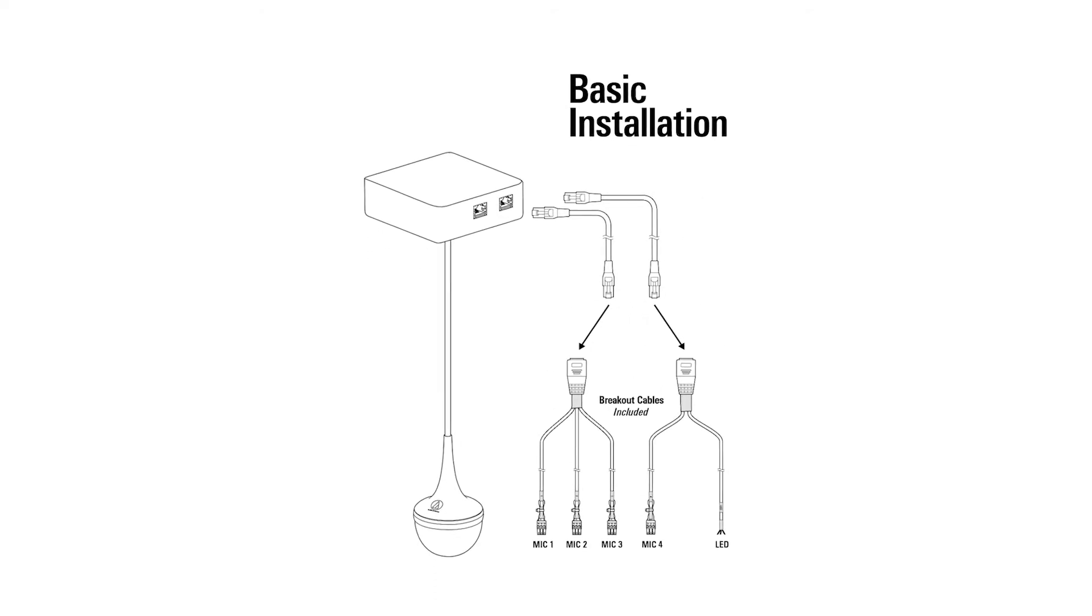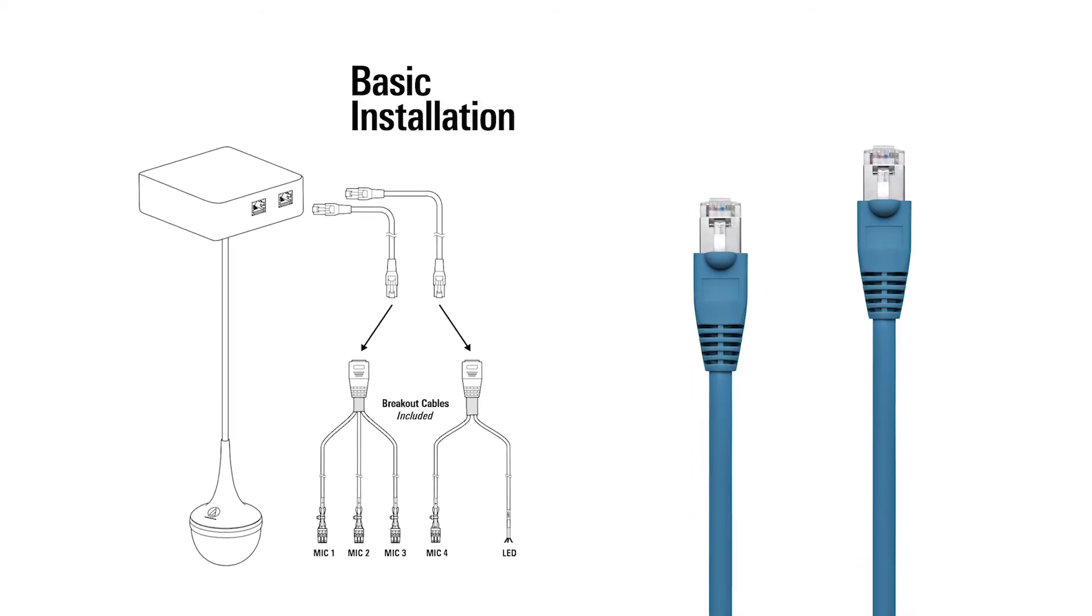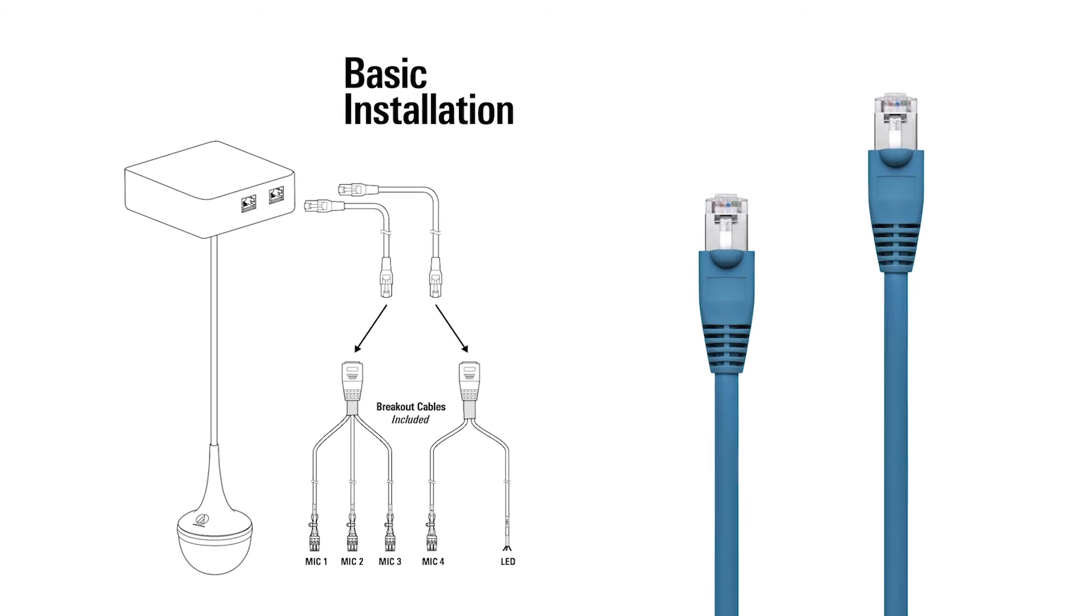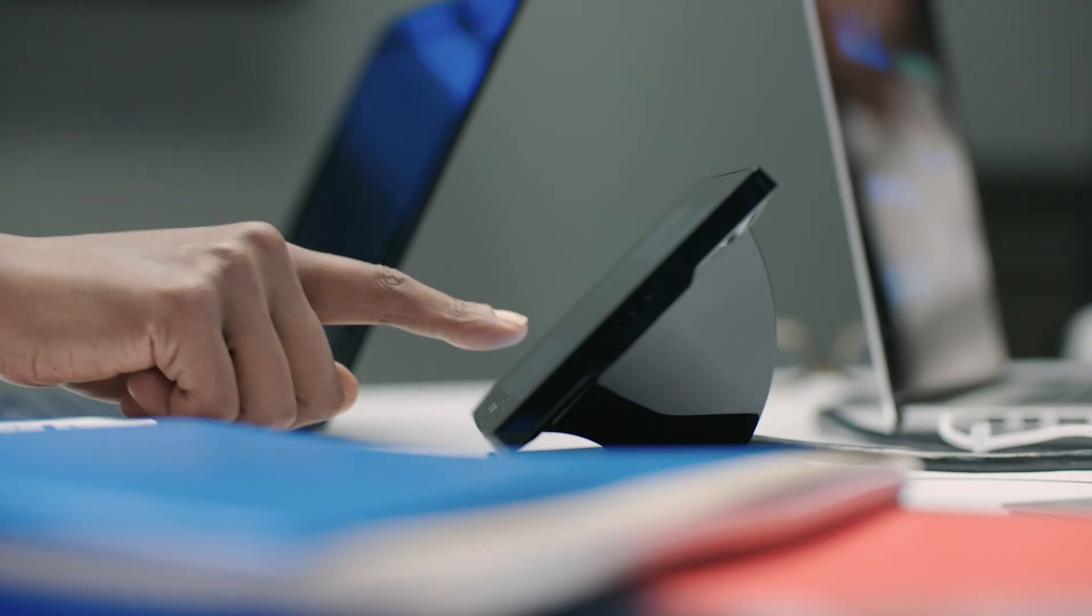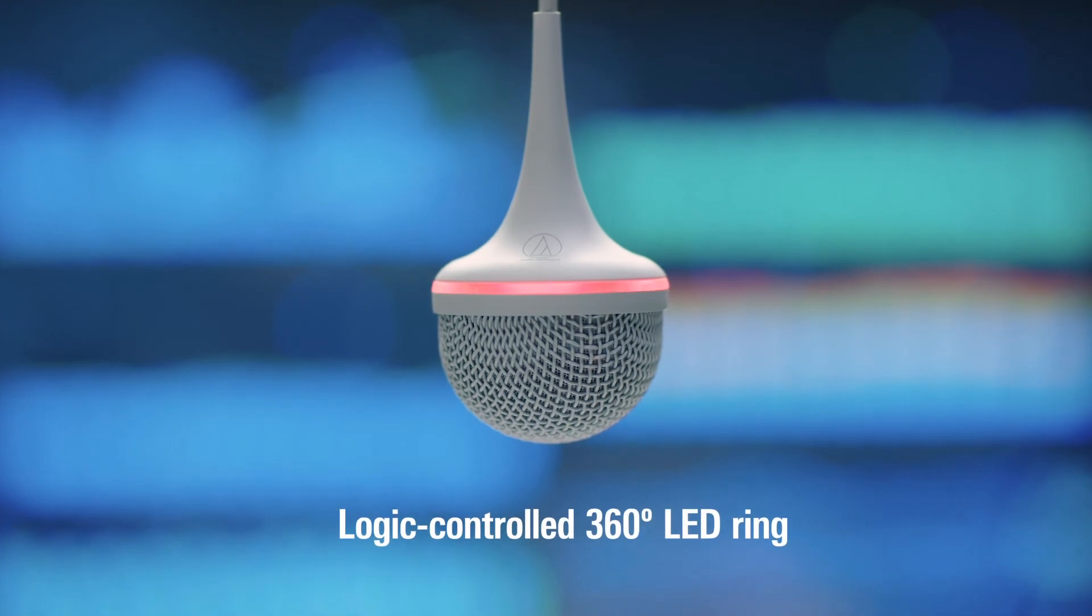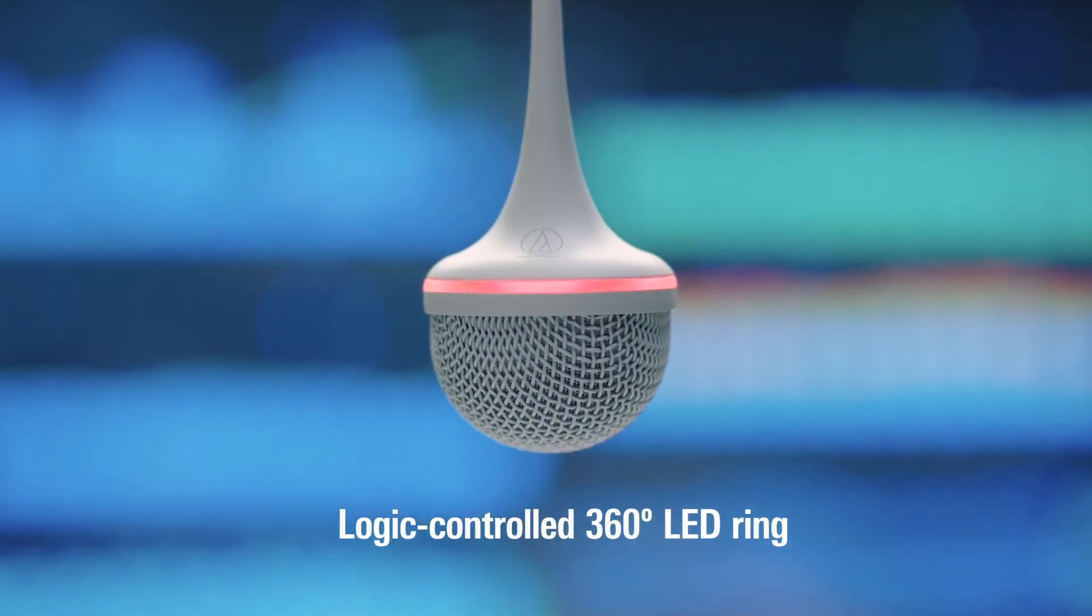ES954 features simple connectivity with both the audio and LED signals being carried through a standard shielded category cable. And the 360-degree red-green LED ring allows everyone in the room to see the status of the call and system.